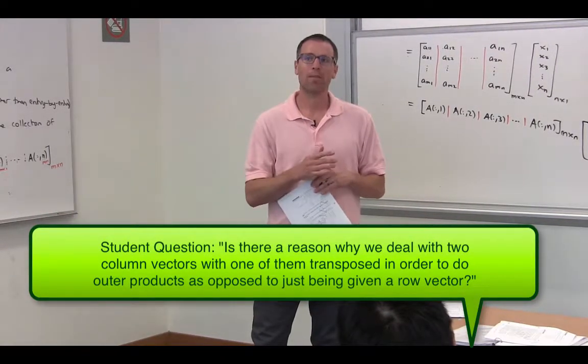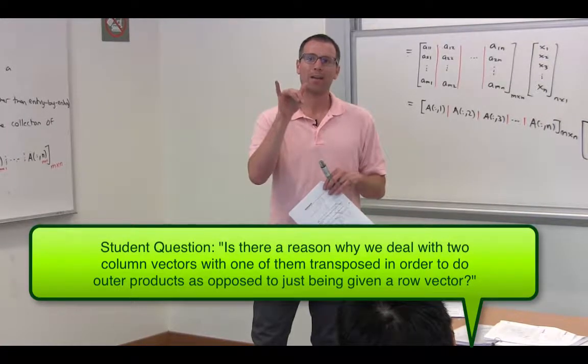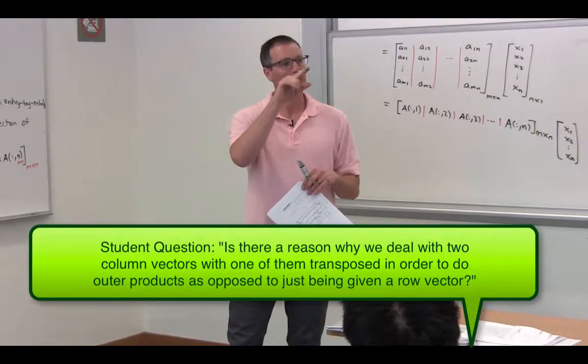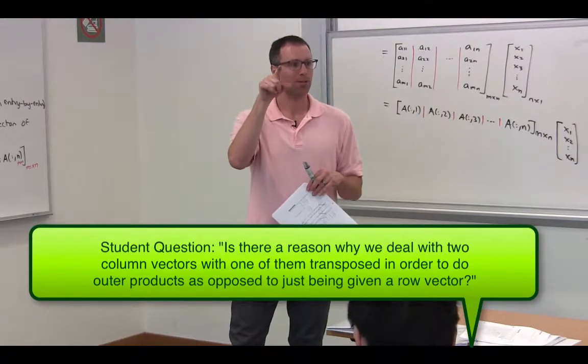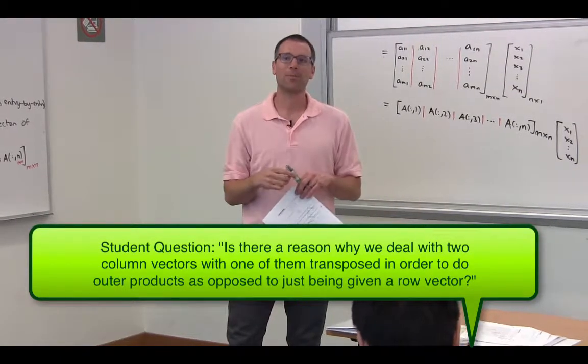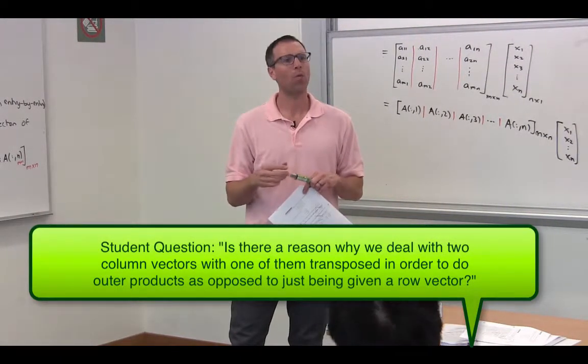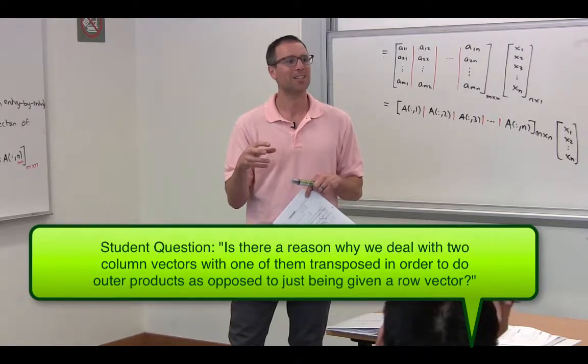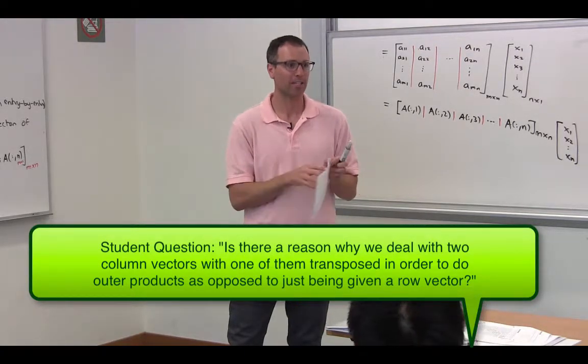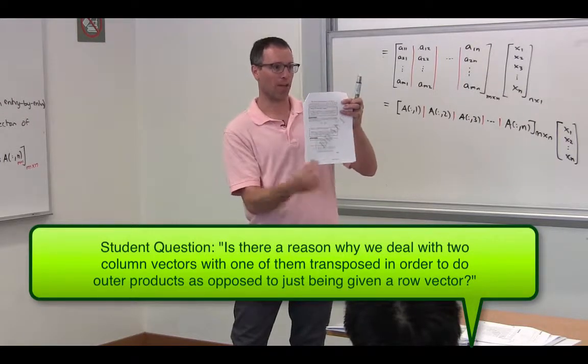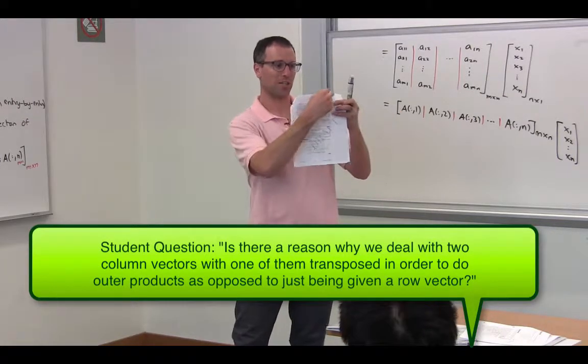In that book, they like to write their rank one updates using an X and Y transpose. And I think, to be honest with you, I've thought a lot about why we, as linear algebraists, have the propensity to use column vectors. And I literally think it's because paper is longer than it is wide, and so it's much easier to list stuff down the page than it is to list stuff across the page.